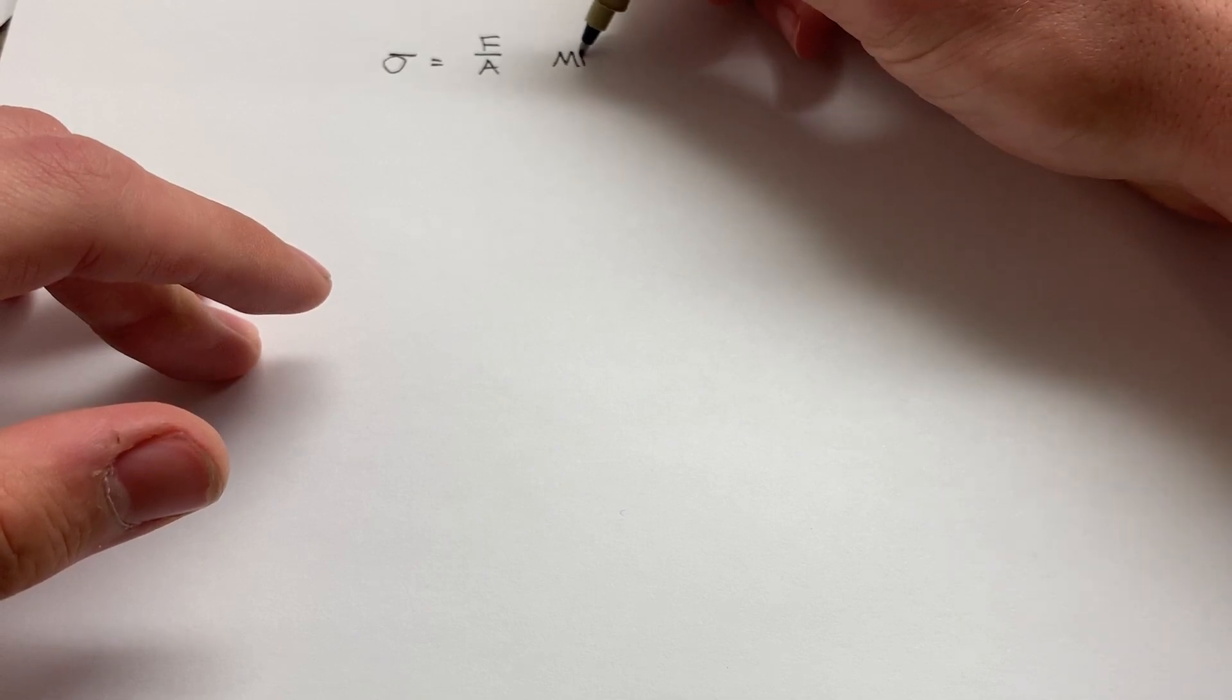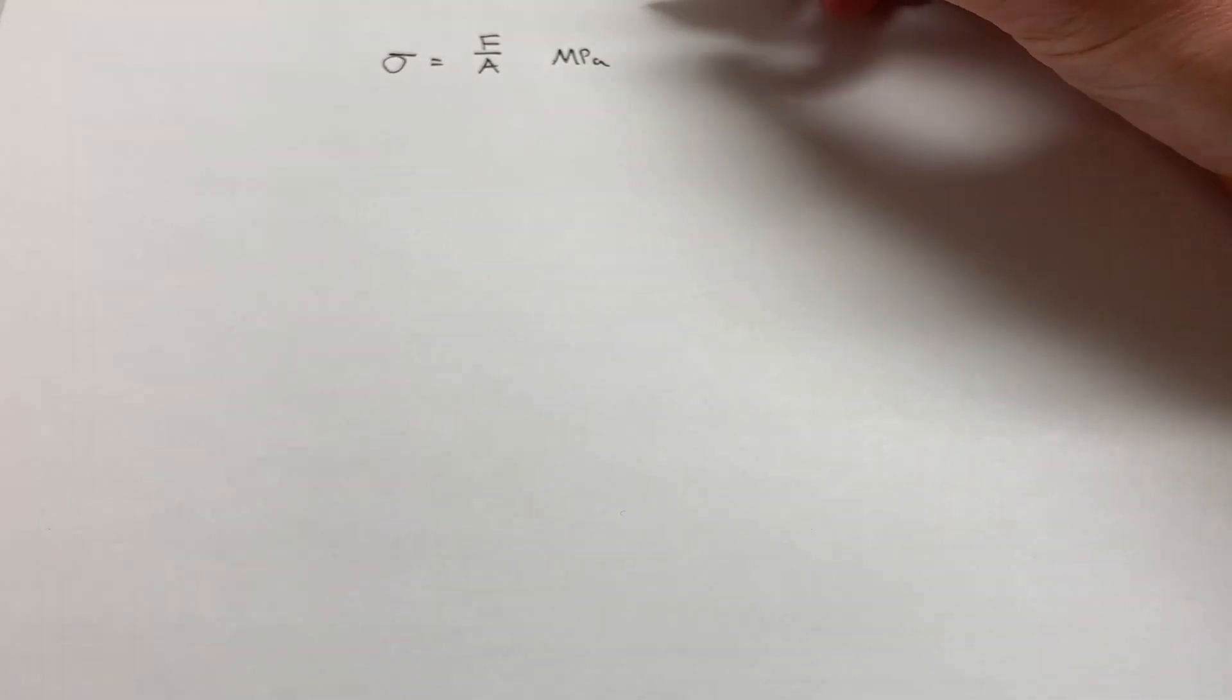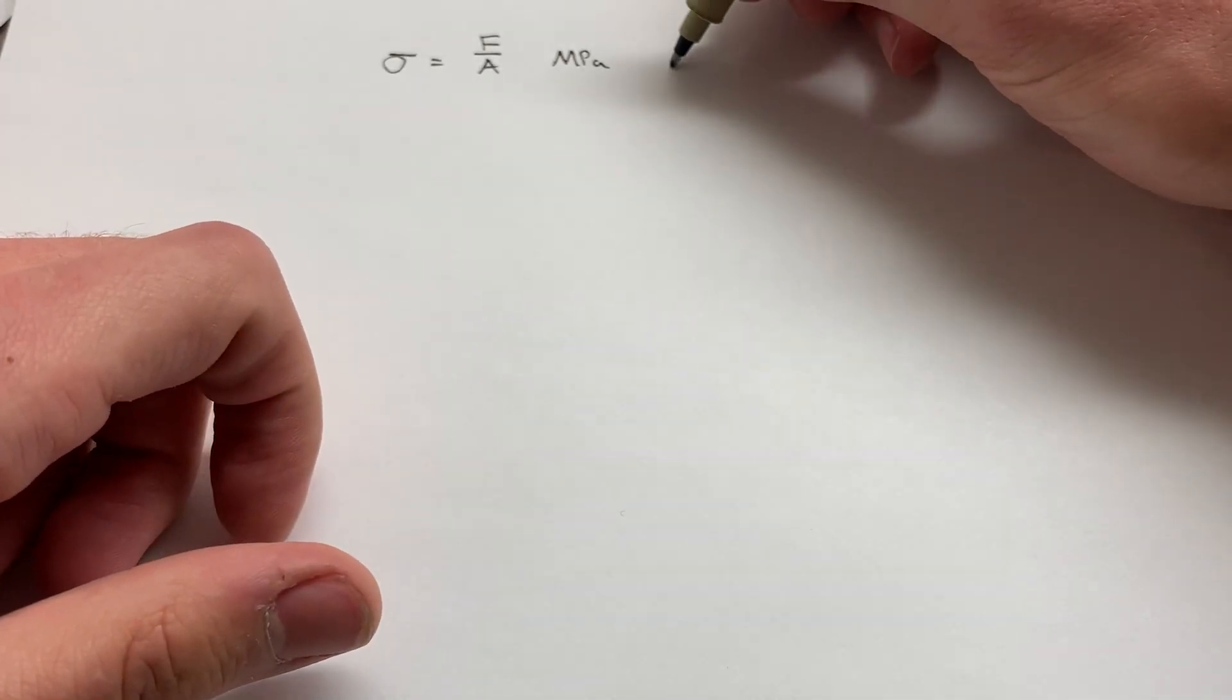In SI units, that'll be megapascals. In BG, U.S. customary units, that'll be PSI or KSI.